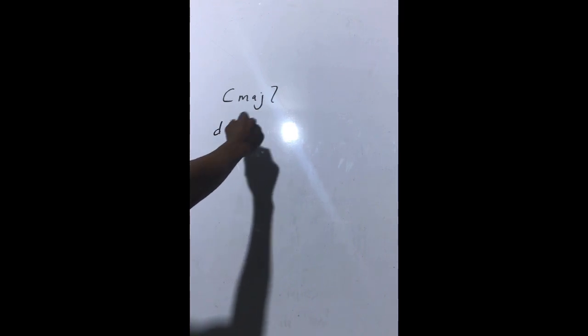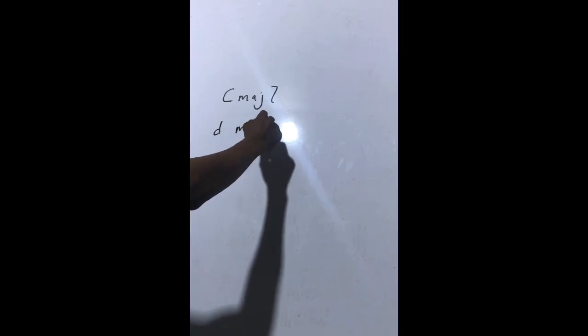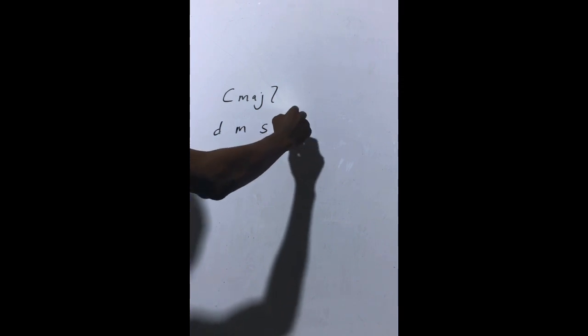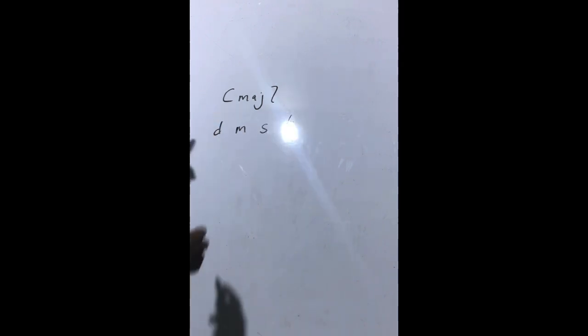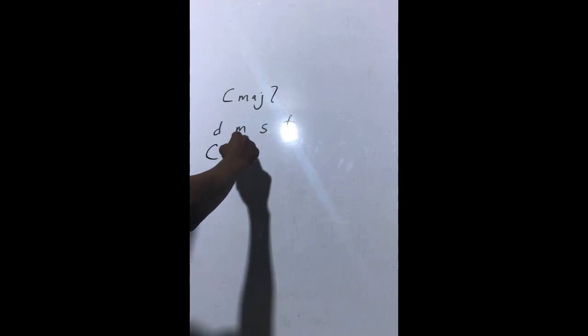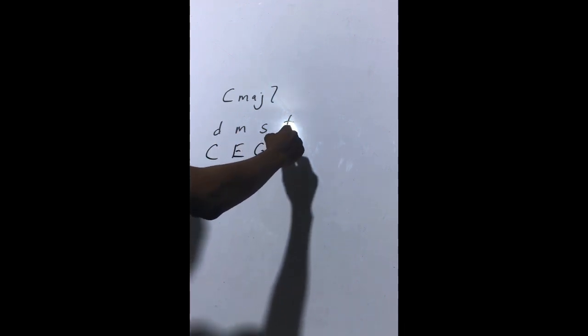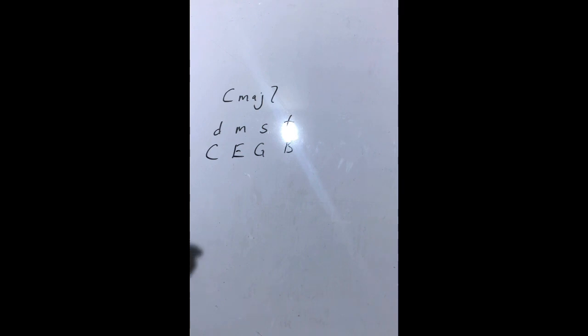We have the root note, we have Mi, we have Sol, now we have Ti. I'm using the tonic solfa system as well. We can use the alphabet system: C, E, G, B. So in the C major seventh chord, we can have the major scale as well. So let's list out the major scale in tonic solfa.